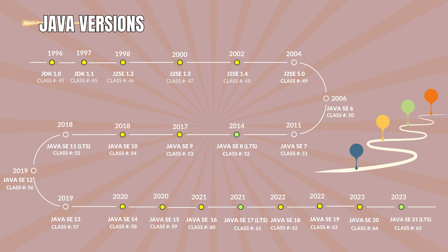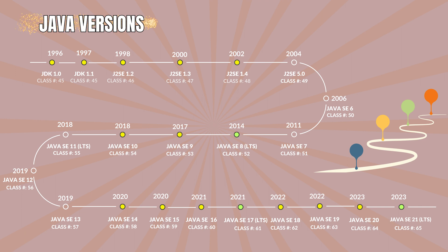The LTS releases so far are Java 8, Java 11, Java 17, and Java 21. Oracle has continued to lead the development and evolution of Java, overseeing major releases and updates, since they acquired Sun Microsystems in 2010. Java has a rich history of involvement from various organizations, both in its development and in the broader Java ecosystem. A summary of all Java versions released so far is presented here. Let's have a look.